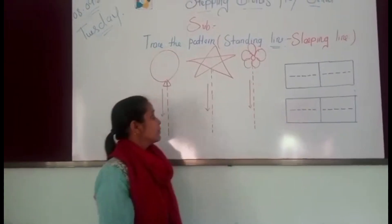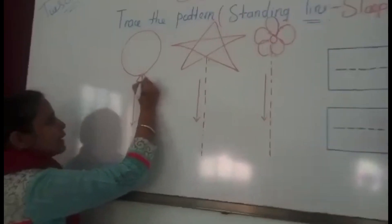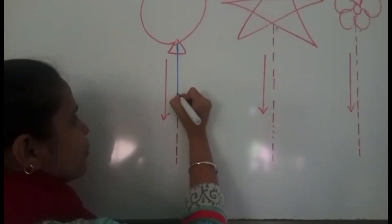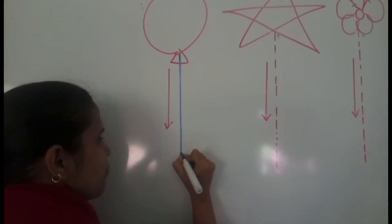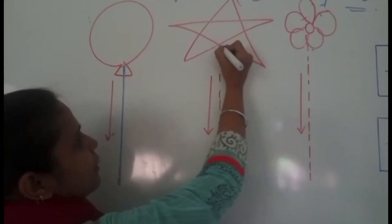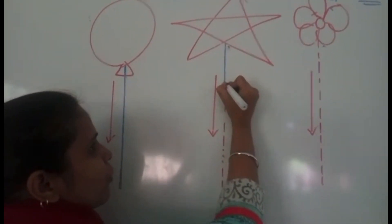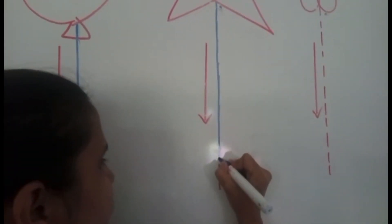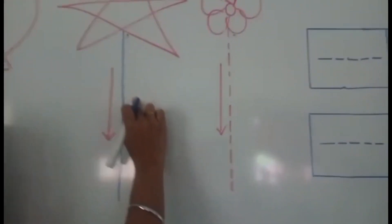So look at the book. Here I am making a standing line. Join dot to dot, from top to bottom — come down. Now from the top, drawing dot to dot and come down. This is a standing line.